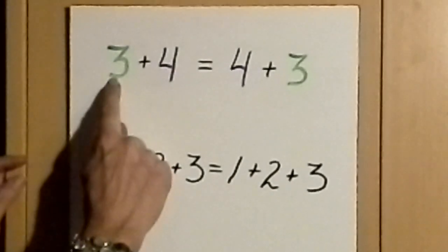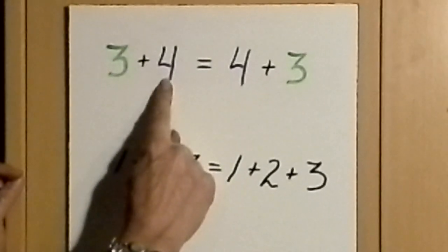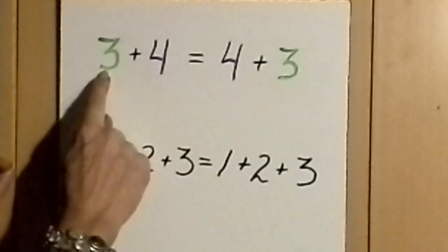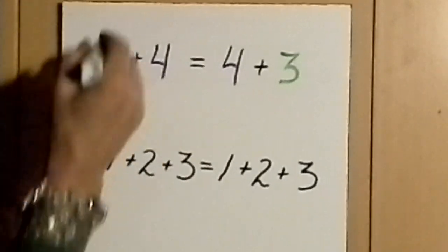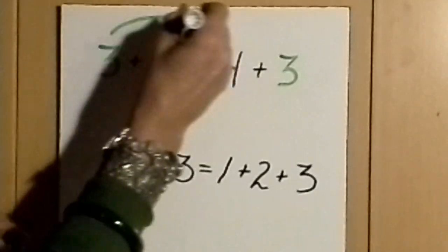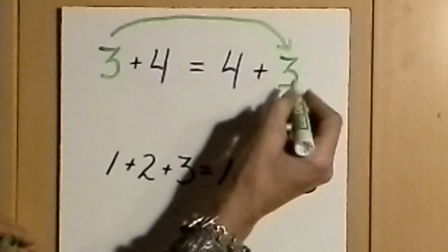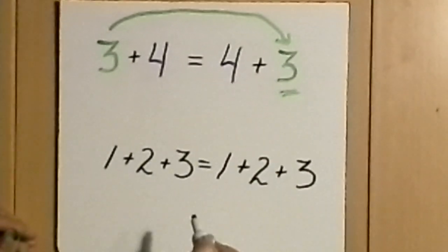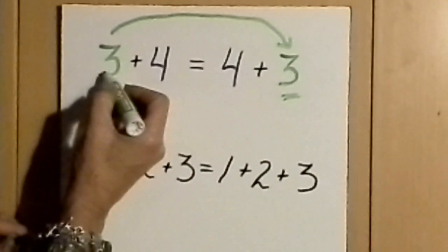Now, you'll notice that I've colored the 3 and the 4 in this case, and the 4 and the 3. When the 3 leaves home, it drives to a new location, but it is still a value of 3 even if it's not in the first position anymore.